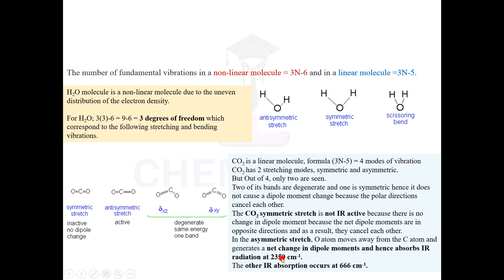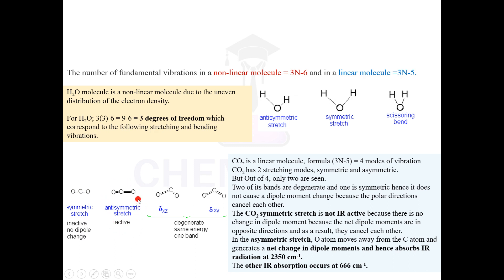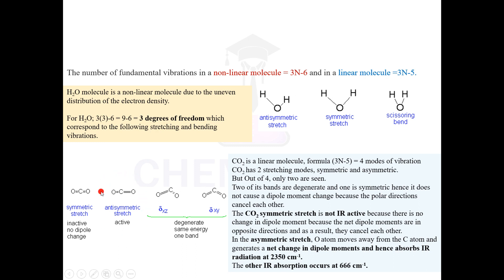But if you look at the CO₂ IR spectrum, you get only 2 peaks — one at 2350 cm⁻¹ and one at 666 cm⁻¹. Out of the 4 modes, only 2 are seen. The first is a symmetric stretch, which has no dipole change and is therefore IR inactive. The asymmetric stretch induces a dipole moment, making it IR active. The two bending vibrations are degenerate — they have the same energy — so they show only one band. CO₂ initially had no dipole moment, but it was induced because of the anti-symmetric stretch.